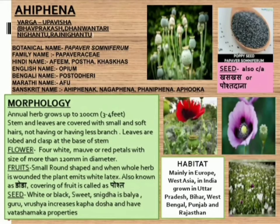Today's topic is Ahifane. Ahifane's classification is Upvisha. Its botanical name is Papaver somniferum, family name is Papaveraceae. Hindi names are Afim, Poshta, Khas-Khas. English name is Opium. In Mongolia it is called Poshto-Dheri, in Marathi Afu, and in Sanskrit: Ahifaneak, Nagufena, Fanifane, Afuak.